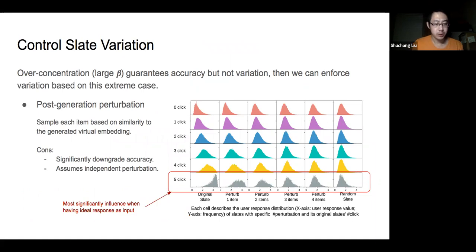Recall that in over-concentration case, we observe high accuracy but almost no variance, no variation, even when you choose different examples of latent Z. So the idea is to enforce the variation of the output in such extreme case while keeping the accuracy satisfactory. A straightforward solution is to apply post-generation perturbation where each position can stochastically select another item based on their similarity to the generated virtual item embedding.